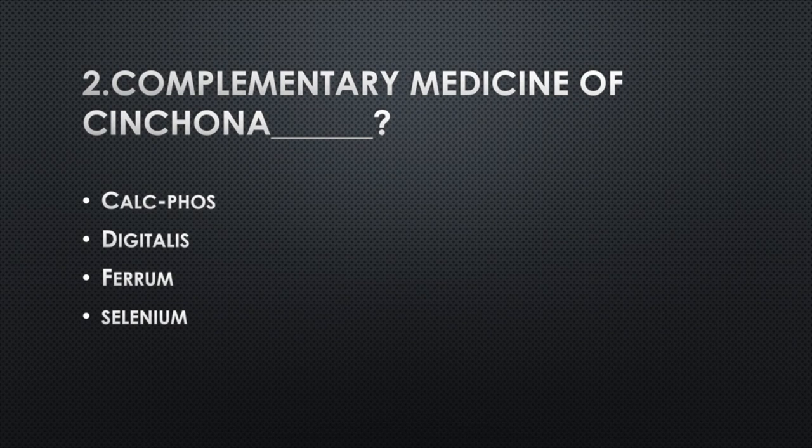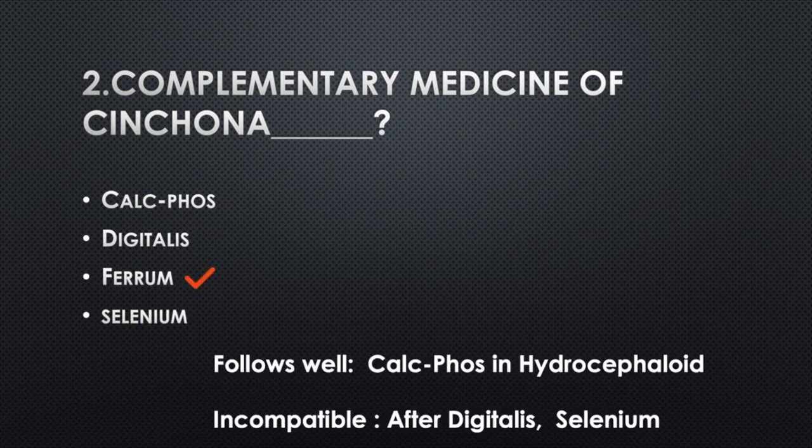Complementary medicine of Cinchona — Option A: Calcarea fluorica, Option B: Digitalis, Option C: Ferrum, Option D: Selenium. Answer: Option C, Ferrum. Relationship: follows well — Calcarea fluorica in hydrocephaloid. Incompatible: after Digitalis and Selenium.